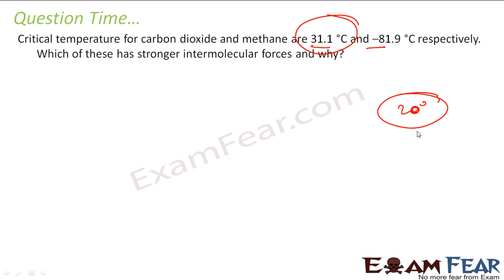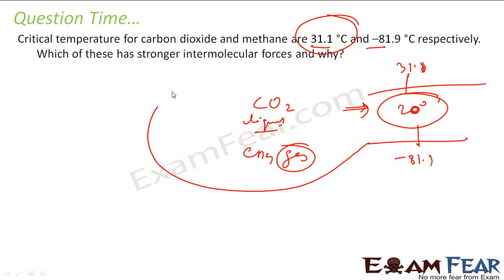If you take this example, let us take the temperature between these values, 20 degrees Celsius, between minus 8.9 and 31.1. So at 20 degrees Celsius, my carbon dioxide will be in the liquid form. Why? Because it is below the critical temperature. But my methane will be in the gas form only. So now at 20 degrees Celsius, my carbon dioxide is liquid and this is gas. That means intermolecular force is high in carbon dioxide because it is liquid. Intermolecular force is low in methane because it is gas.